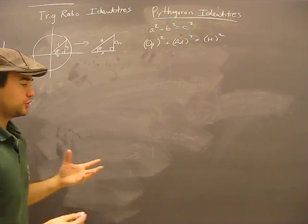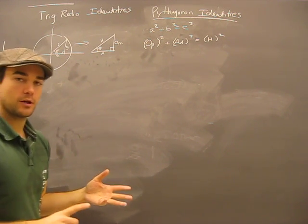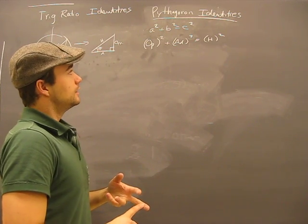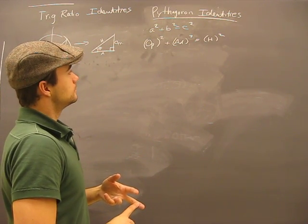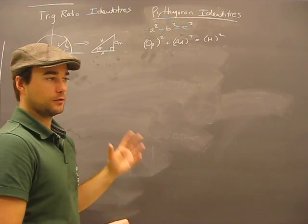Well, those are all ratios. Sine is a ratio, opposite over hypotenuse. Cosine is a ratio, adjacent over hypotenuse. And tangent is a ratio of sine, or opposite over adjacent.